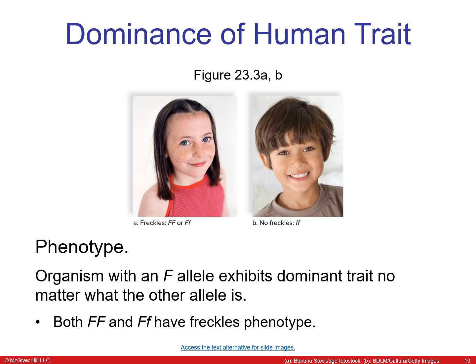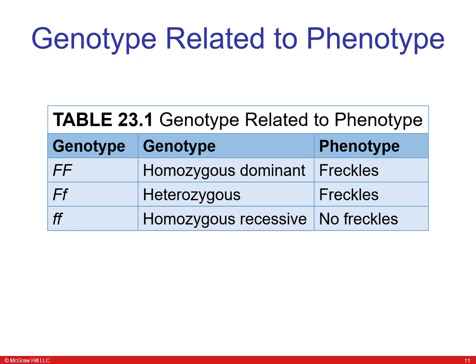An organism with a dominant allele exhibits the dominant phenotype regardless of the other allele. So both FF and Ff have the freckles phenotype. A table shows how genotype affects phenotype — the only way to get no freckles is with a homozygous recessive genotype, lowercase ff.